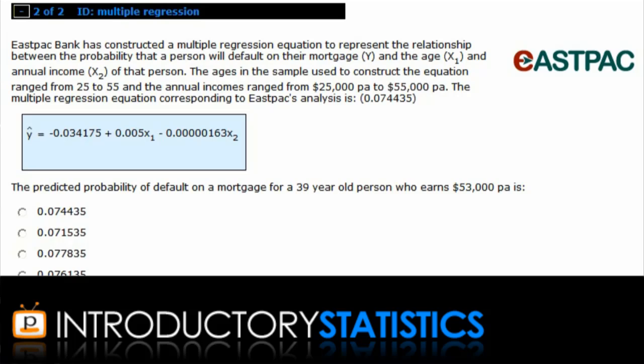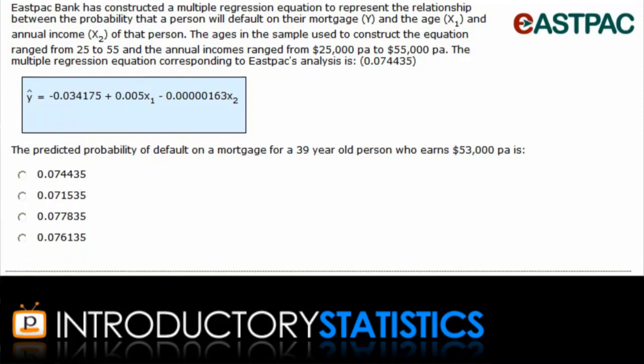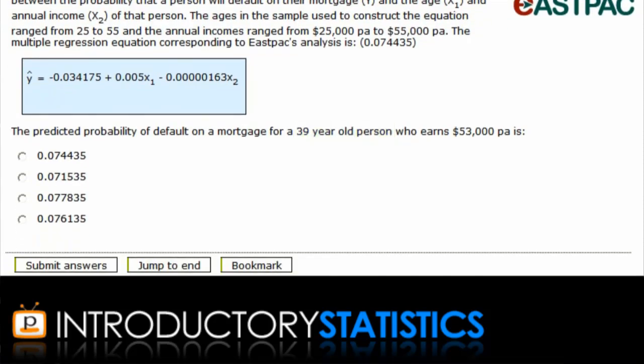In this question, Eastpac Bank has developed a model to predict the probability that a person will default on their mortgage. This model takes into account two explanatory variables, the age of the person and their annual income. The regression model that the bank developed is given here. Now, the bank is looking at a person who is 39 years old and earns $53,000 a year. What is the predicted probability that they'll default on their mortgage?